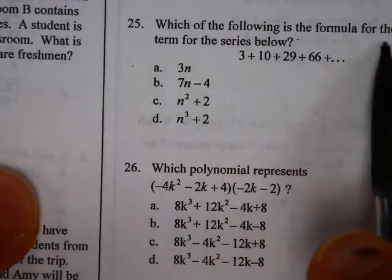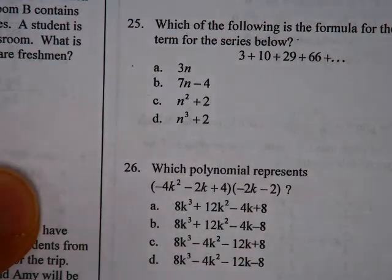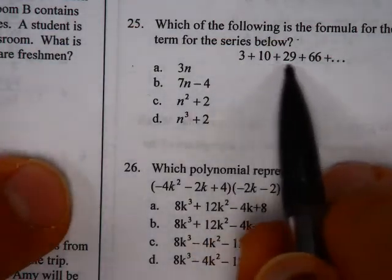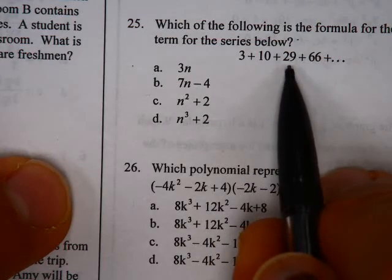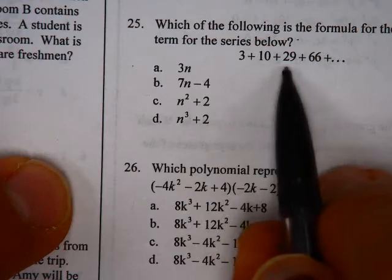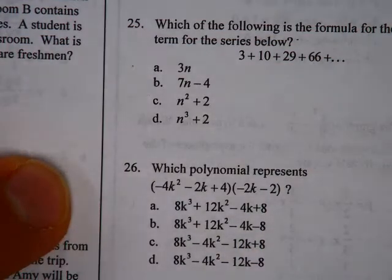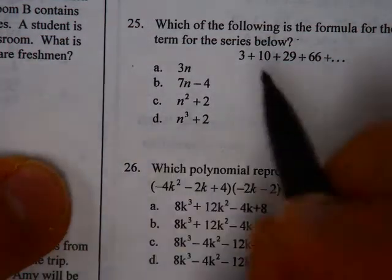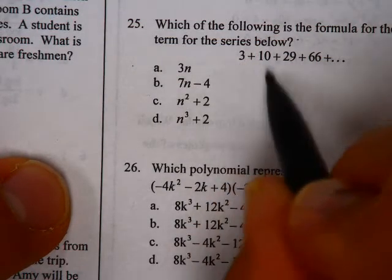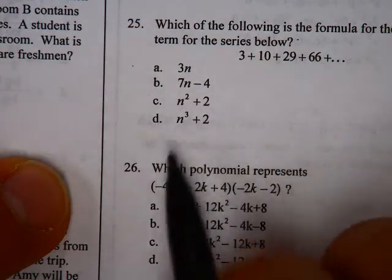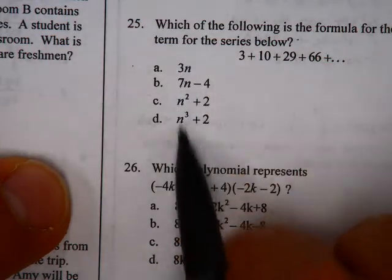So what's the formula for the nth term of the series below? Well, this is growing by a certain amount—it's growing by seven and then by increasing amounts here, by 19 and then by more. So if this is the first term, then plugging in one should give us three. Okay, now that works for all of these basically.